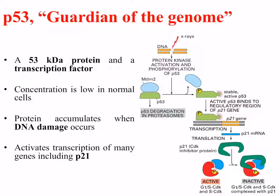When P53 gets phosphorylated, it dissociates from MDM2 and binds DNA. As a transcription factor, it binds to the promoter regions of specific genes — in particular P21. P21 then gets transcribed and translated, and as a CDK inhibitor, it inhibits the CDK complexes responsible for driving the cell cycle forward. The cell cycle stops, and the DNA can be assessed for damage. If the damage is manageable and the DNA can be repaired, the cell cycle is initiated again. However, if the damage is too great, the cell is destroyed rather than continuing with potentially damaging changes.